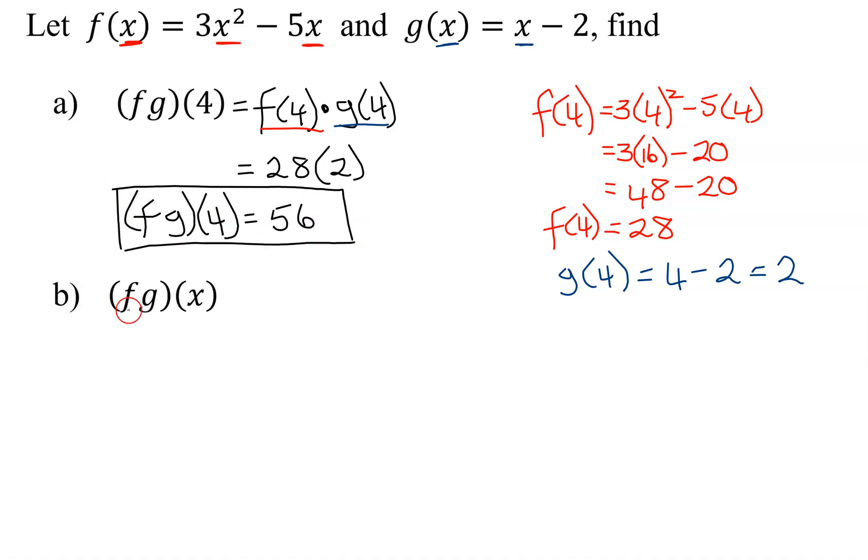Now in part b, we have to find f times g of x, or the product function, the general definition of it. So by definition, the product function f times g of x is just f(x) times g(x). What was f(x)? It's up here. So it is 3x² minus 5x. I'm putting it in parentheses because I'm going to have to multiply it by g(x), which is x minus 2.